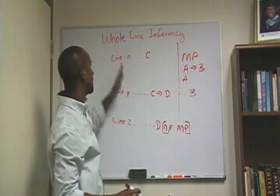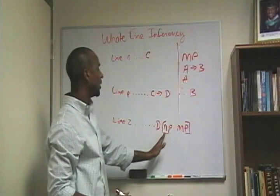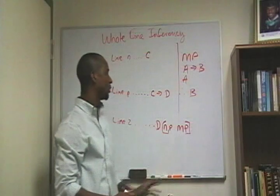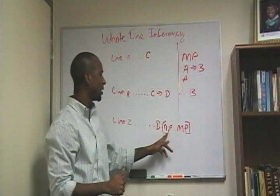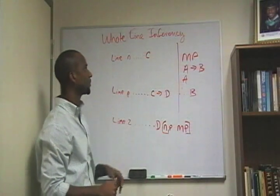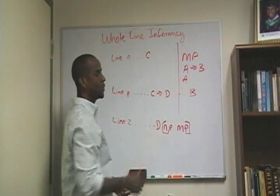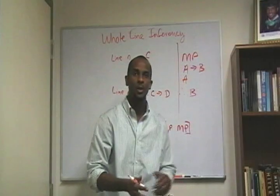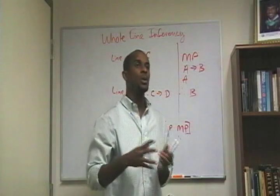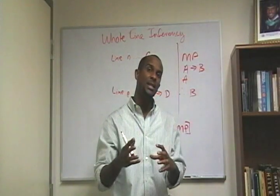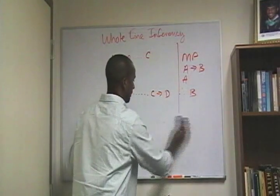So that would be the application of modus ponens to whole line inferencing. In an actual proof, there would be numbers here — it wouldn't be line N. It might be line 6, line 10, and I would put here 6, 10 MP, which would tell the person reviewing the proof that modus ponens was applied to those two lines. We could do the same with disjunctive syllogism or hypothetical syllogism. What I want to incorporate, however, are some new ideas that I haven't discussed up until now.